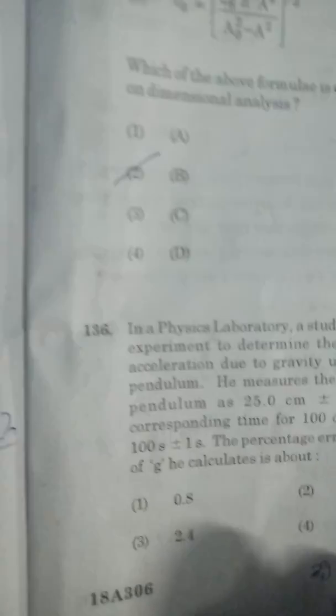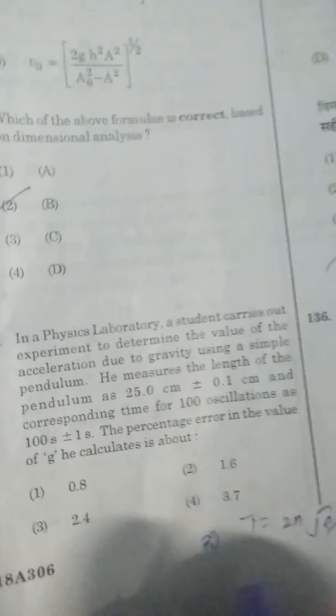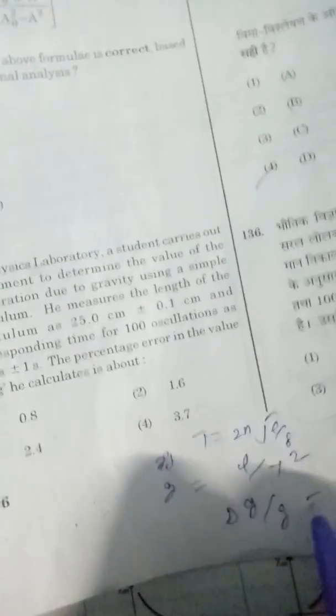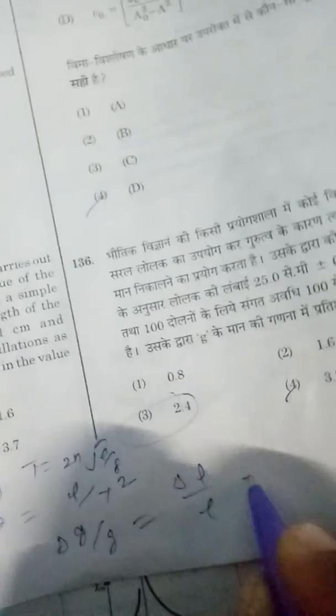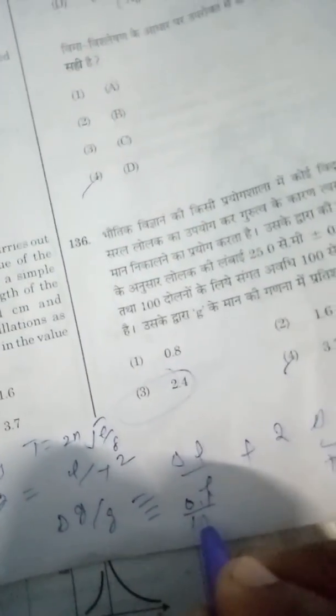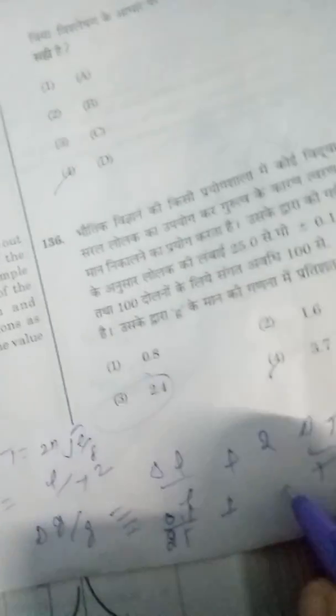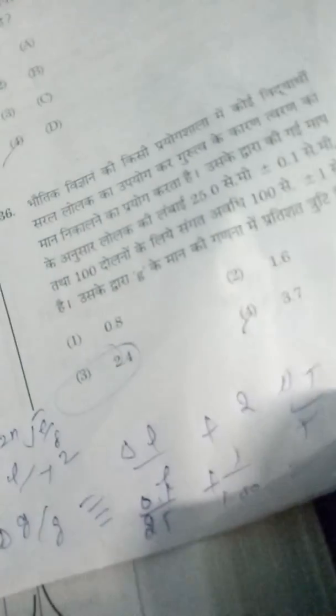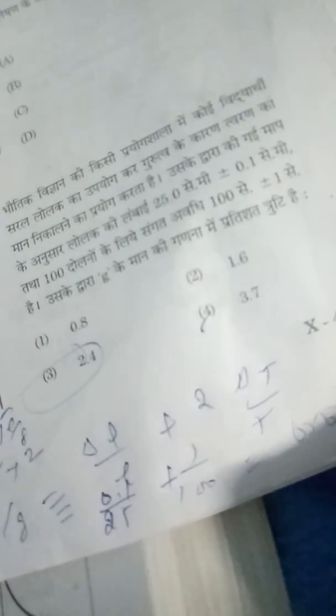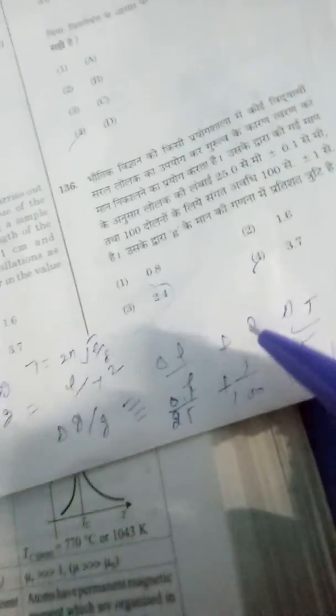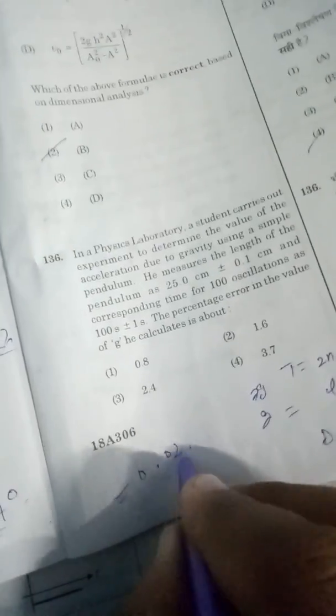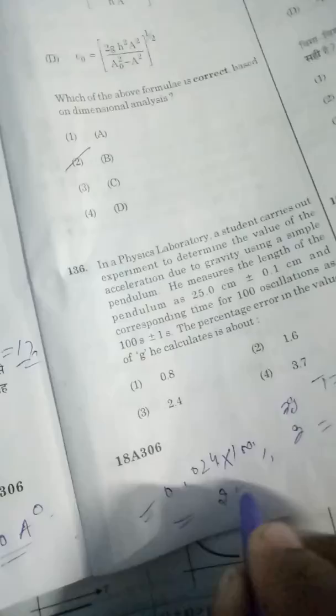In question 136, the error in g: T equals 2π√(l/g), so g has dimension l/t². Delta g by g equals delta l by l plus 2 times delta t by t. That's 0.1/25 plus 2 times 1/100, which equals 0.004 plus 2 times 0.01. This gives 0.024 times 100 percent, which is 2.4 percent. Correct option is 3.